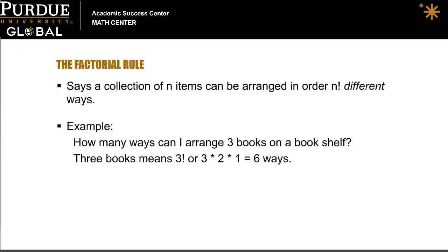For example, how many ways can I arrange three books on a bookshelf? Since I have three books, the factorial rule says that the number of different ways they can be arranged is three factorial. This is three times two times one, which is equal to six. So there are six different ways that we can arrange three books on a shelf.